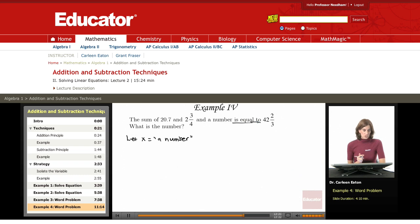Looking at the left half of the equation, the sum of - that's telling me that I need to add. And what I need to add is 20.7 and 2 3/4ths and a number, and I said I'm going to call the number x, is equal to 42 and 2/3rds.